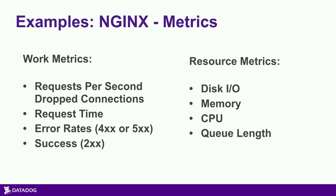Let's apply this to web servers — Nginx specifically, though these metrics apply to pretty much any web application. Work metrics: throughput is requests per second — how many API calls are you returning, how many pages is Drupal rendering? Performance is request time: how fast can you turn around a request under load? Error rates are your 200s versus 500s versus 400s — are you returning the API responses or web pages your customers want to see?